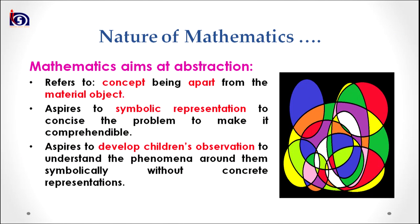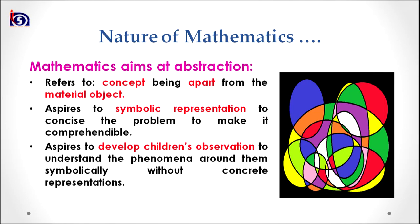Coming to the fourth property under the nature of mathematics: mathematics aims at facilitating abstraction. Abstraction refers to concepts being apart from the material object — it is a phenomenon in which you cannot sense or experience something directly through your senses. You need to use logic and reasoning to understand it. Abstraction uses symbolic representation to concise the problem and make it more comprehensible.